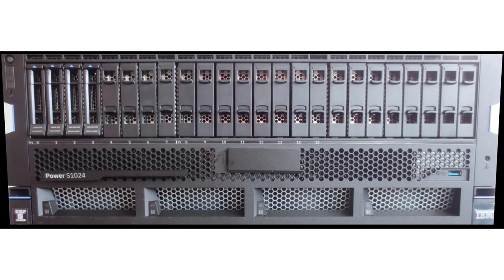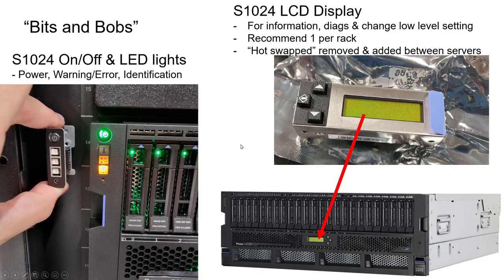Here's a look at the front of the machine. There's a little connector that clips into the side — the same for the S1022 as well. There's a button to press to switch the machine on, and then different indicators. The identification indicator is blue — you can switch that on remotely so that when you're going to replace a disk drive or something, you're going to the right machine and not taking out a perfectly good part from a different machine. And then there are the warning and error lights as well.